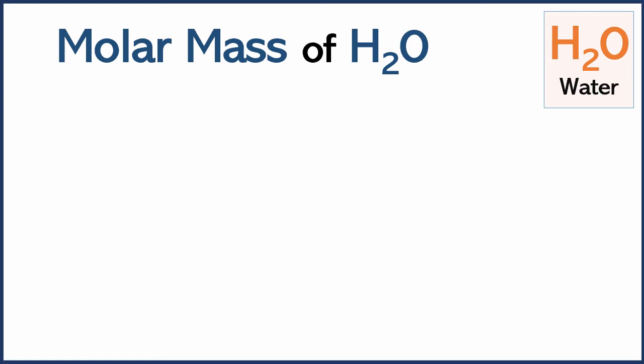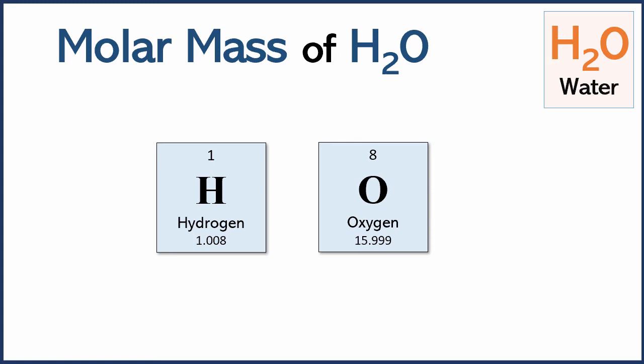From the periodic table, hydrogen has atomic mass 1.008. For H2O, we have two hydrogen atoms, so 2 times 1.008. Adding these together, we get 18.015 grams per mole.